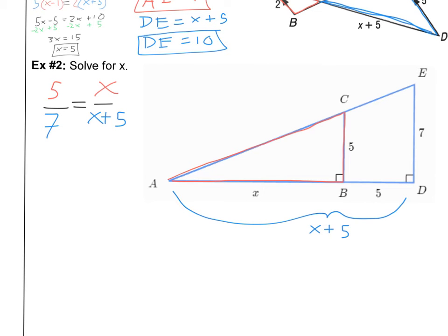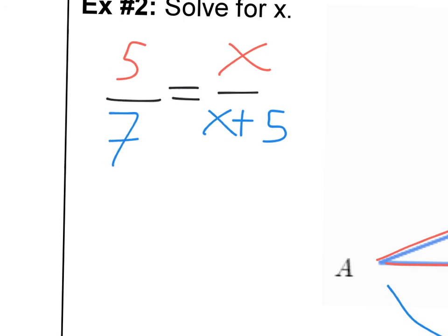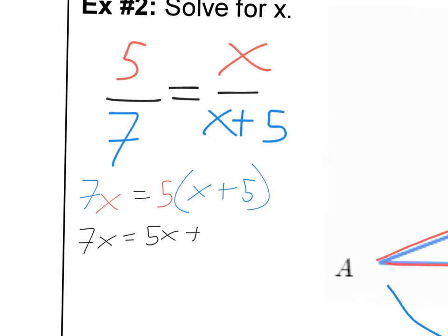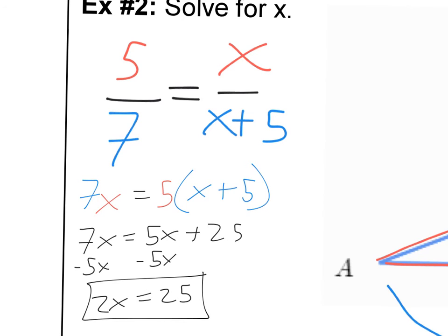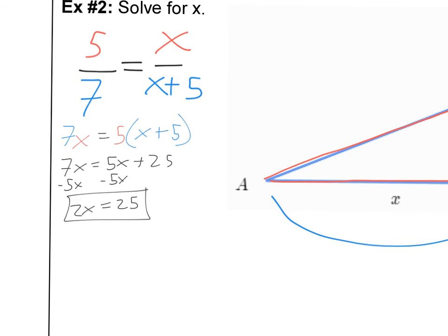Now I cross multiply and solve. 7X equals 5 times (X plus 5), which gives 7X equals 5X plus 25. Subtract 5X from both sides to get 2X equals 25. Divide both sides by 2 and X equals 12.5.